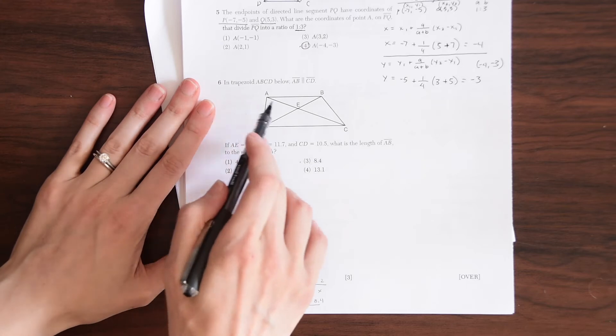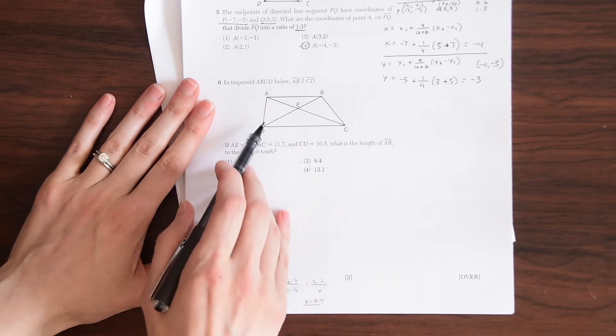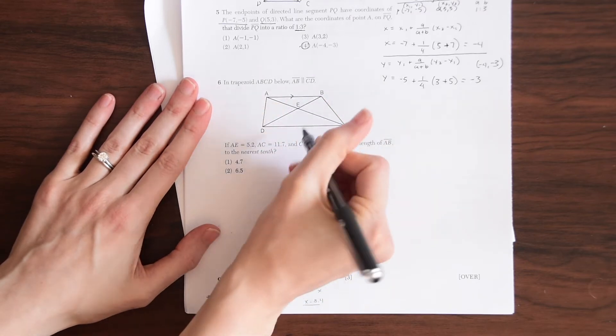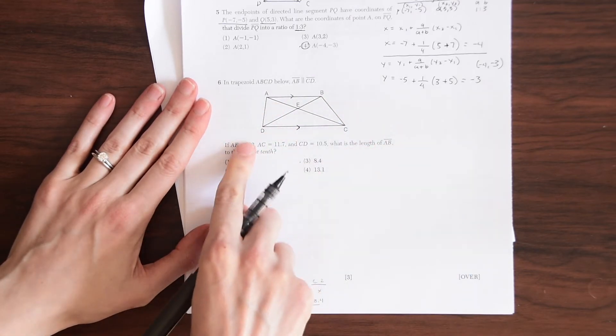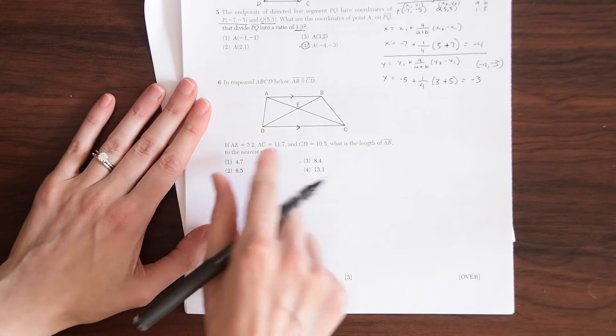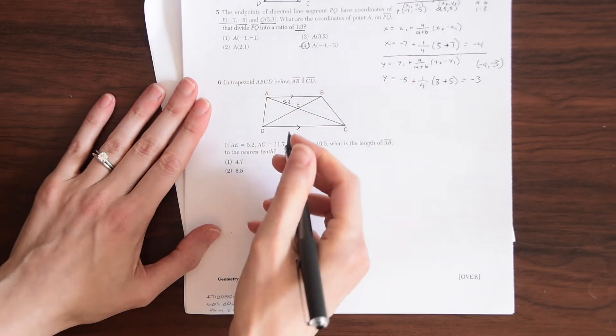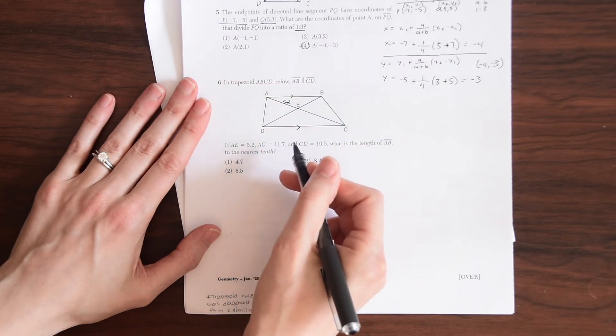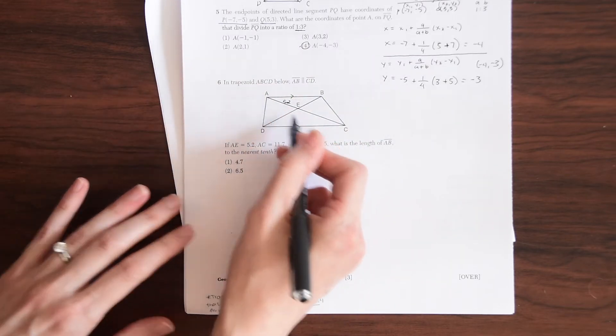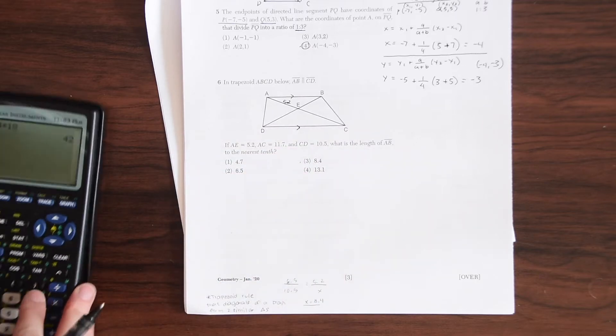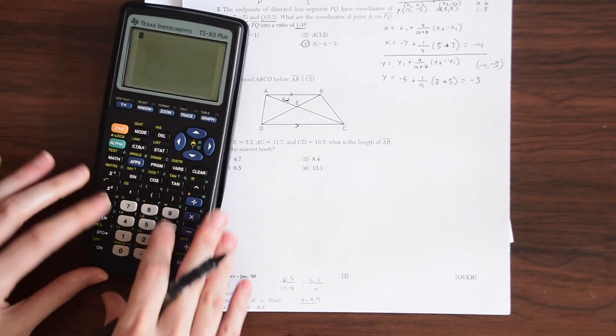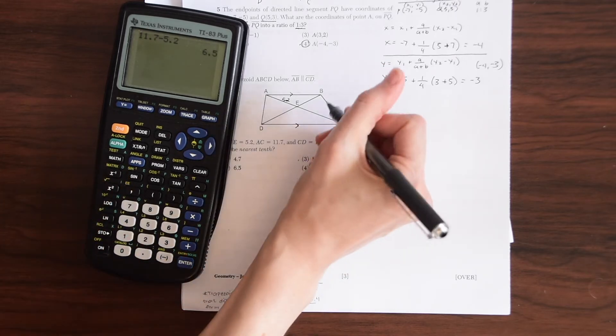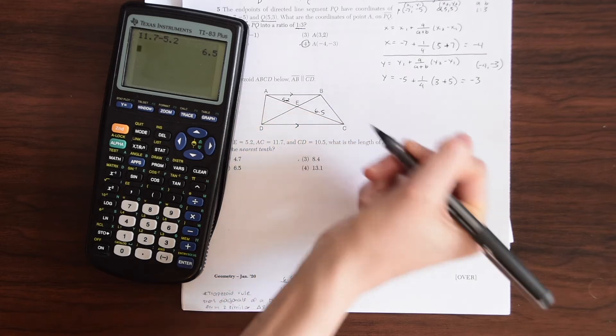In trapezoid ABCD below, AB is parallel to CD. So AB is parallel to CD. If AE equals 5.2, AC equals 11.7. So this entire thing equals 11.7. So if we subtract 11.7 minus 5.2, we know that this segment EC is going to be 6.5.